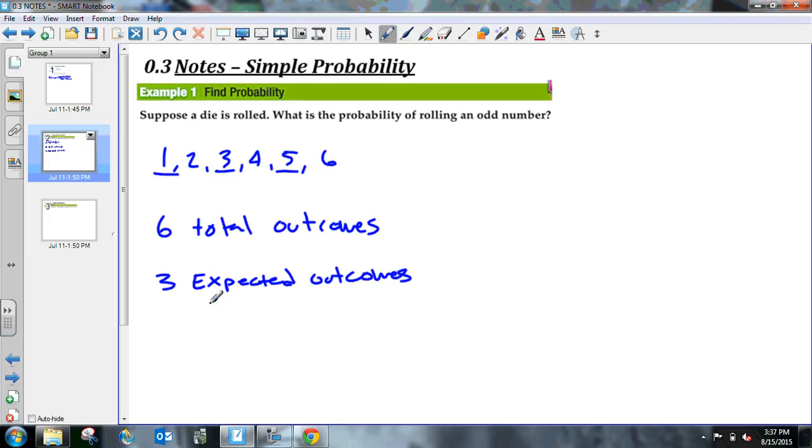Let's write this out how I would want you to write it. It's asking what is the probability of rolling an odd number. So P(odd number) equals my expected outcomes, which is 3, divided by my total outcomes, which is 6. That as a fraction can be simplified to 1/2, which is also the same as 50%.